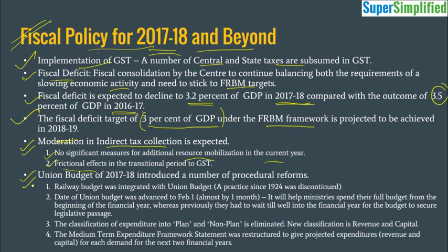Union Budget 2017-18 introduced four procedural reforms: first, the railway budget was integrated with the union budget, ending a practice going on since 1924; second, the date of union budget was advanced to February 1 — almost one month earlier — helping ministries spend their full budget from the start of the financial year; third, the plan and non-plan expenditure classification was eliminated and replaced with revenue expenditure and capital expenditure; fourth, the Medium-Term Expenditure Framework statement was restructured to give projected revenue and capital expenditures separately for each demand for the next two financial years.